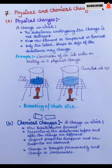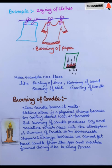Next we are going to discuss chemical change. A change in which new substances are formed, where properties of the substances before and after the change are different, original properties disappear and new properties appear, and the change is brought about permanently — that is an irreversible change. For example, rusting of iron, burning of wood, souring of milk, burning of candles.